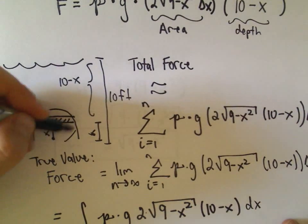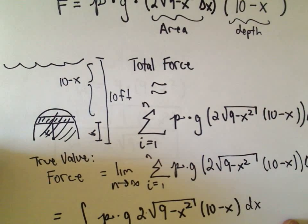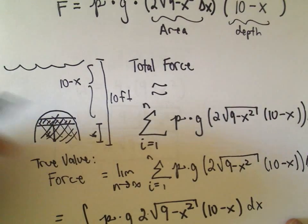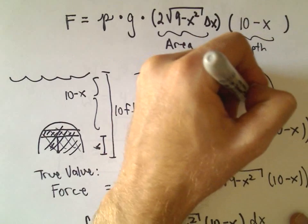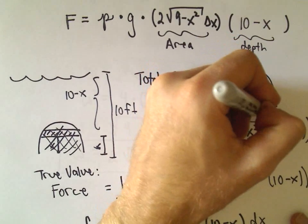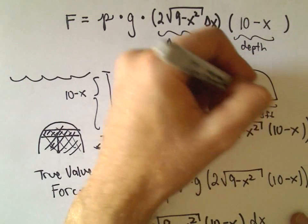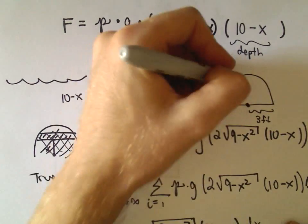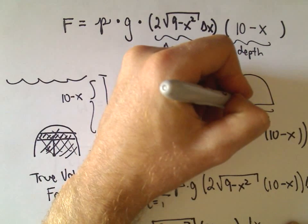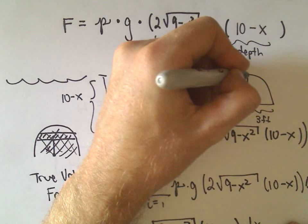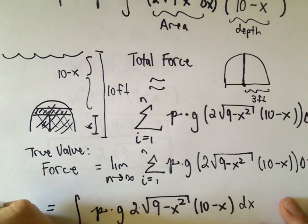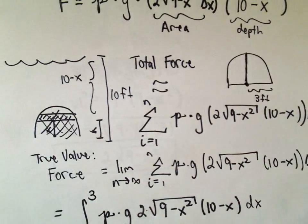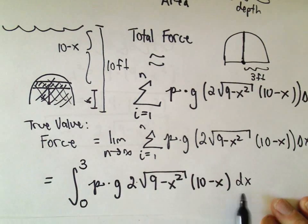We want to integrate over the entire gate. Since the gate is semicircular with a radius of 3 feet, and x is measured from the bottom, x ranges from 0 at the bottom up to 3 at the top. So the limits of integration are x from 0 to 3, and now we have our integral set up to calculate.